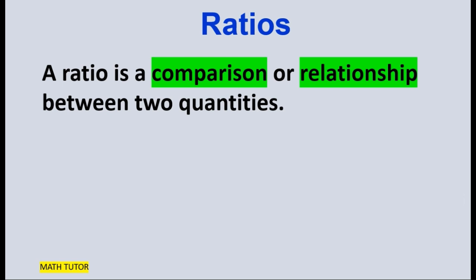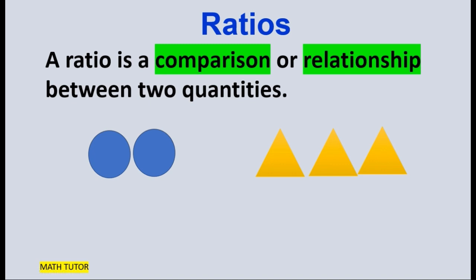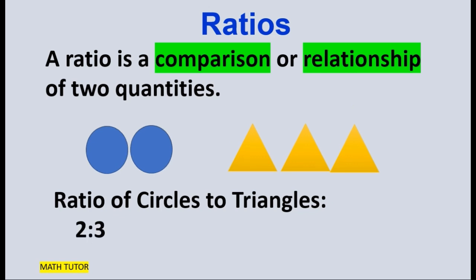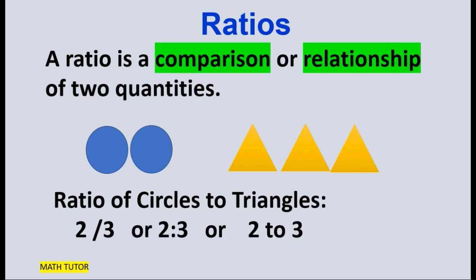Here there are two circles and three triangles. The ratio of circles to triangles is 2 is to 3. Here, two refers to the circles and three refers to the triangles. Order is very important when we are talking about ratio. The ratio 2 is to 3 can also be written as 2 by 3 or 2 to 3.